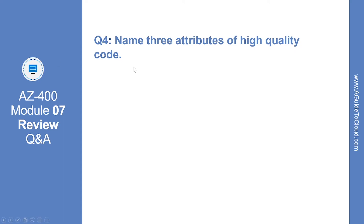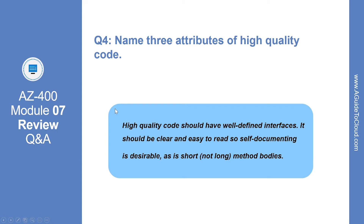Question number four: name three attributes of high quality code. High quality code should have well-defined interfaces. It should be clear and easy to read, so self-documenting is desirable.